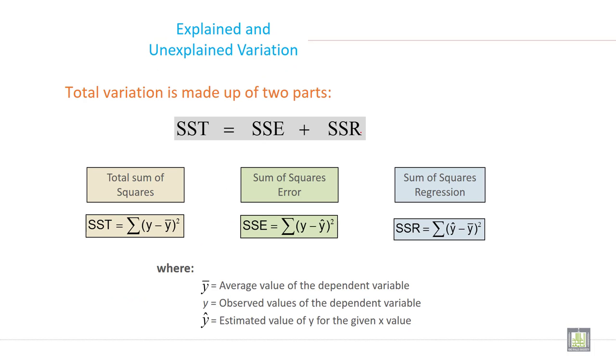Explained and unexplained variation. Total variation is made up of two parts: one is called explained variation and the other is called unexplained variation.